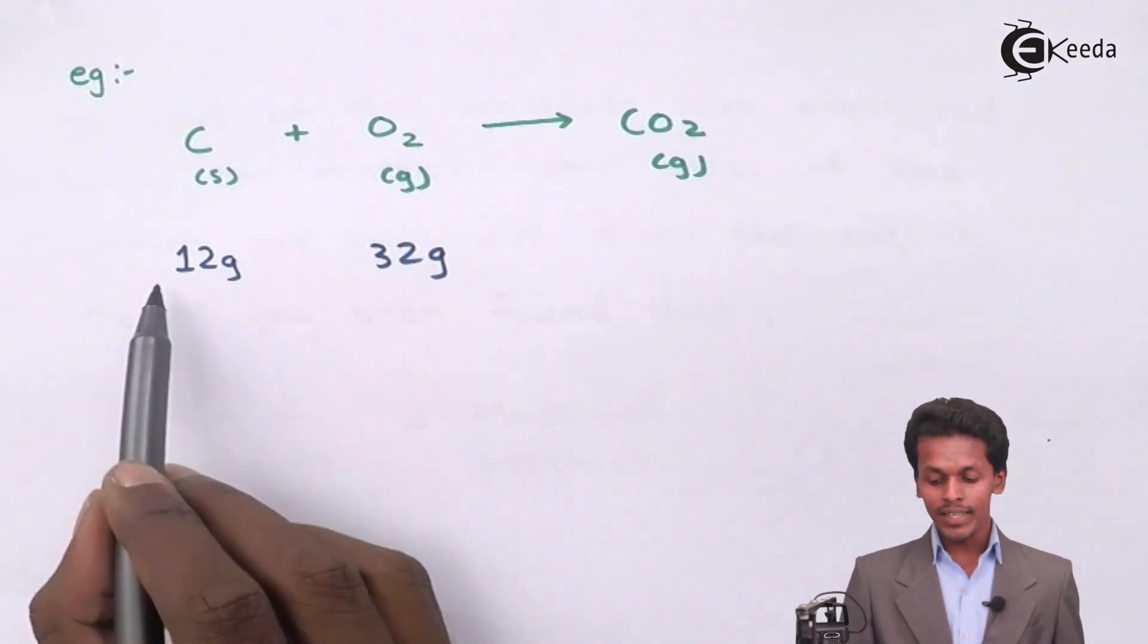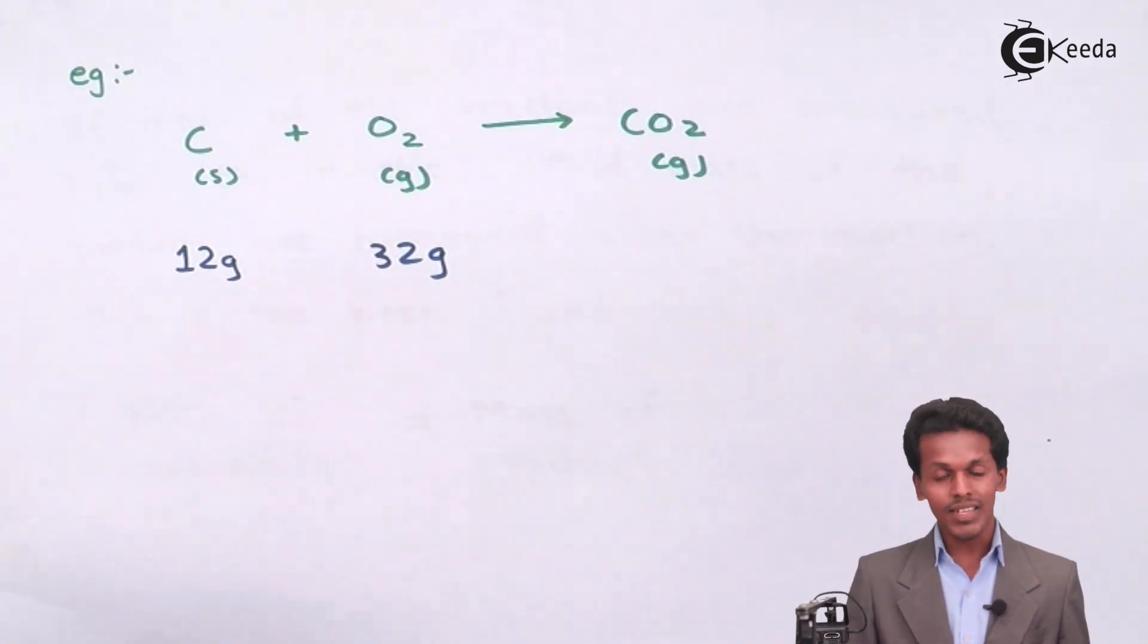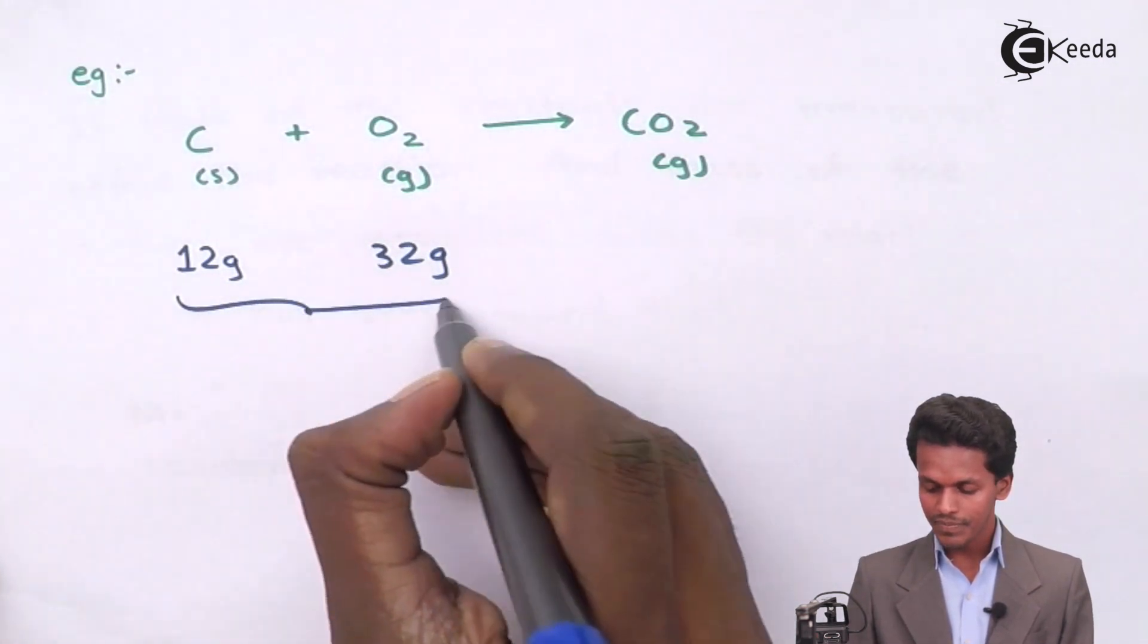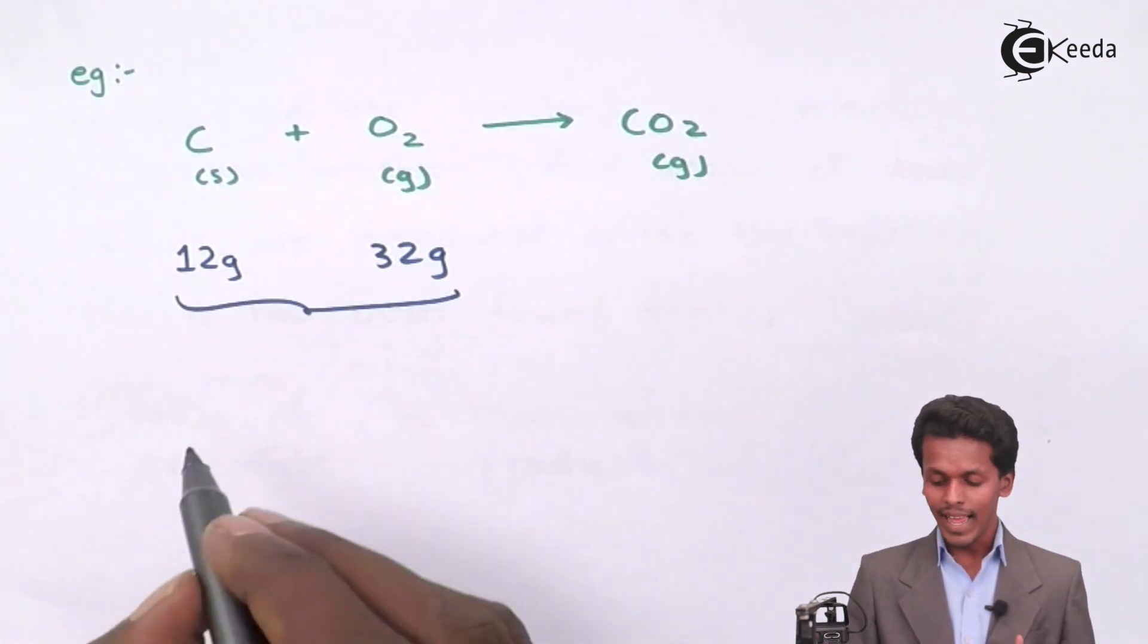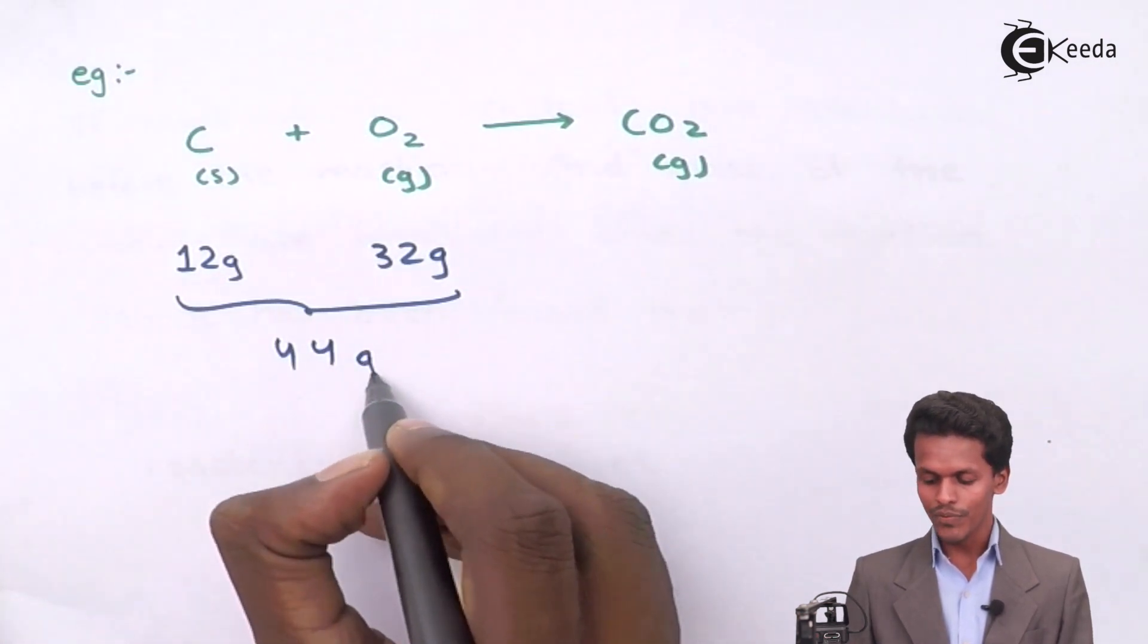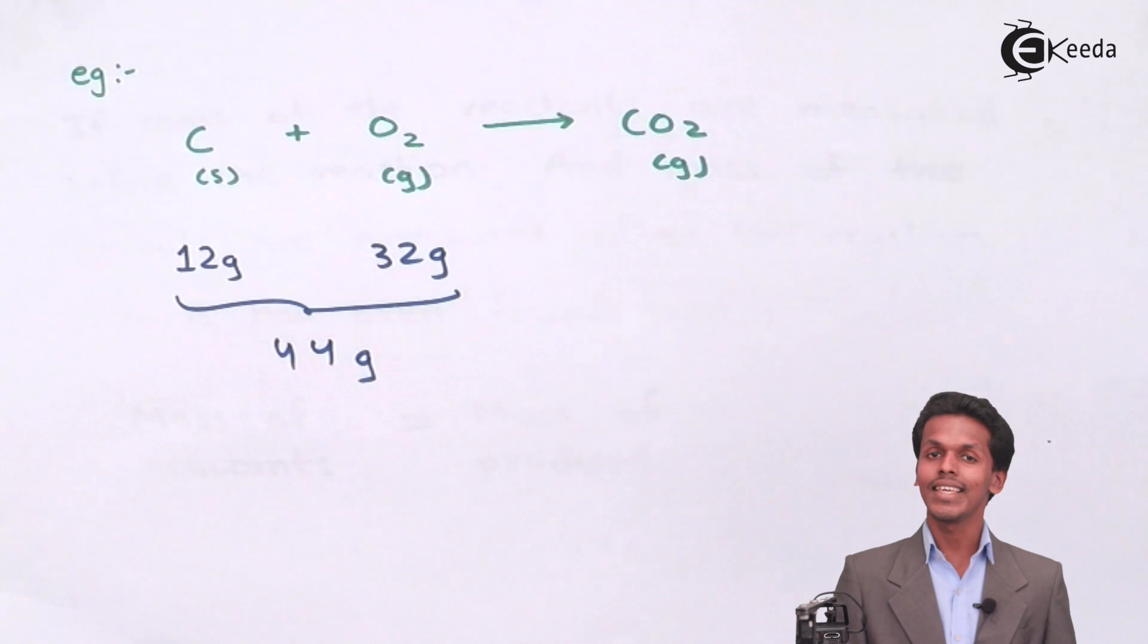If we combine both masses of the reactants, we get a total mass of 44 grams for the reactants.